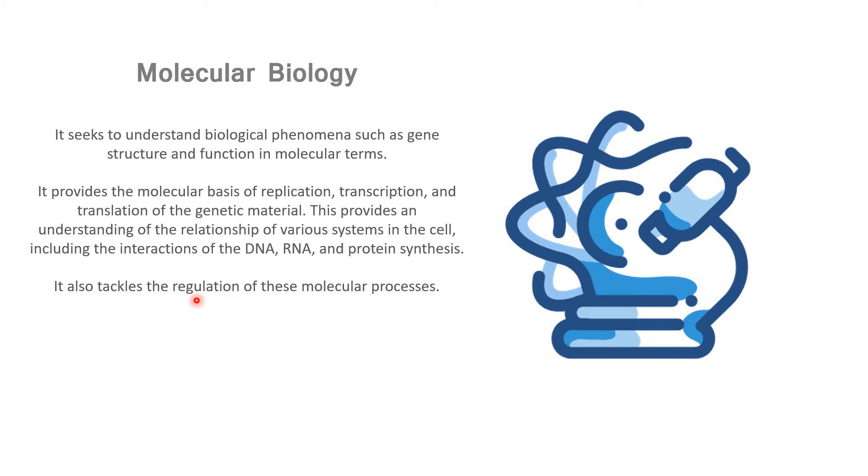It also tackles the regulation of these molecular processes. Regulation is a separate video because in another video, we are going to discuss how is gene expression regulated or what are the checkpoints that are accompanying the different stages of cell division. Basically, regulation means how is check and balance happening in molecular processes. For example, there has to be only one egg cell to be produced every menstrual cycle. How is that regulated? That is actually understandable in terms of meiosis, a molecular process.